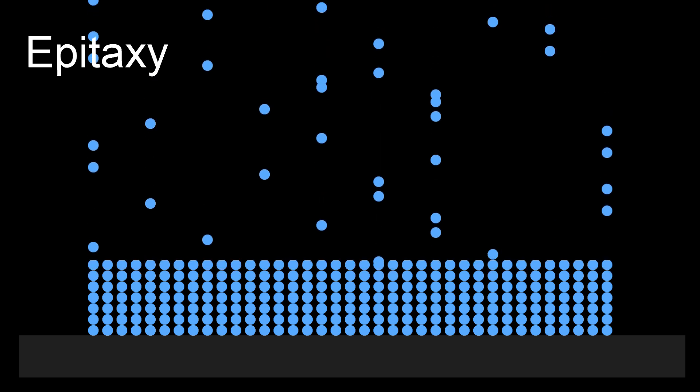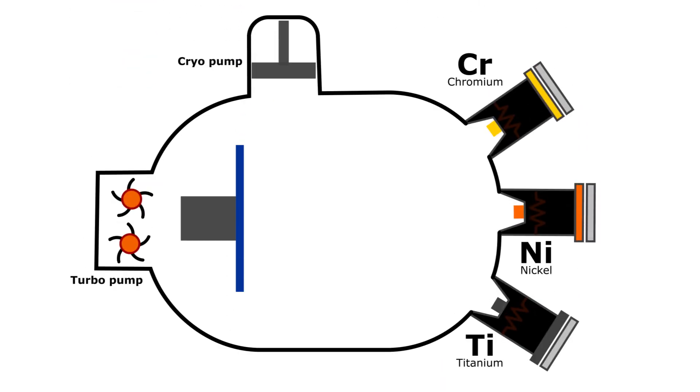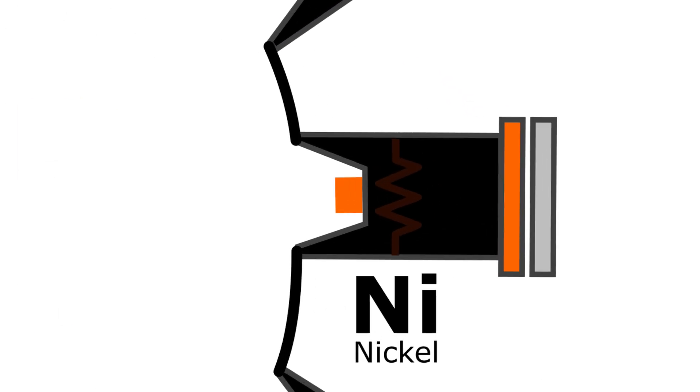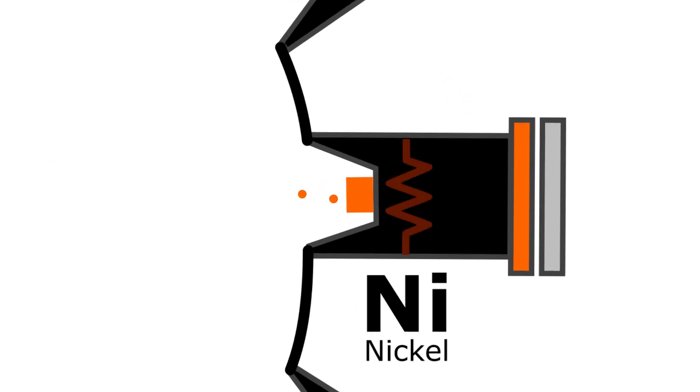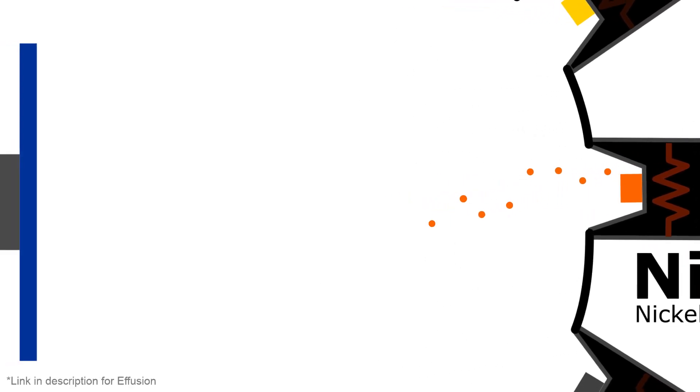One type of epitaxy is molecular beam epitaxy. In this method, the material to be deposited is heated in an effusion evaporator cell. It then diffuses, or actually effuses, out of the cell, and then heads towards the target surface.